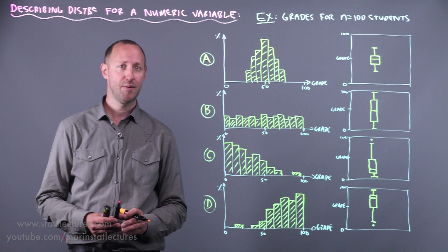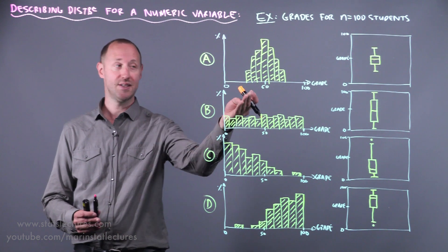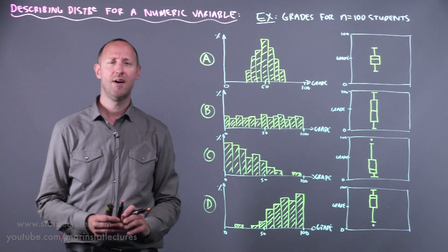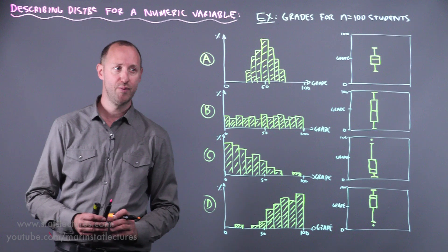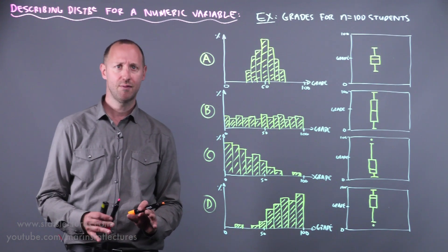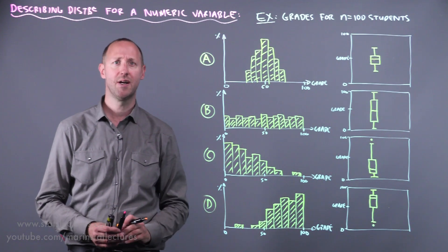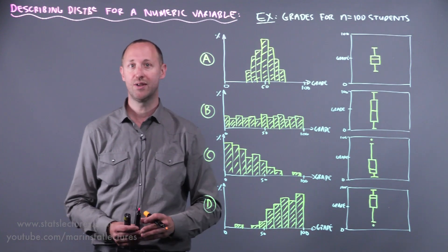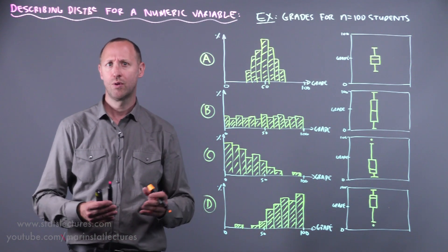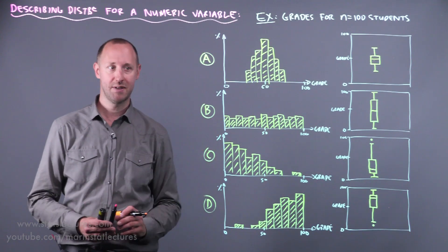We've already talked a little bit about different plots we can make like a histogram or box plot and how these summarize the distribution for a numeric variable. But let's start with first verbally describing the shapes we see as well as center and spread, and then in following videos we'll get to more quantitatively or numerically describing some of these things.